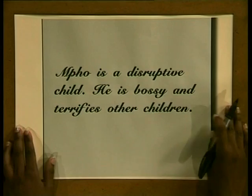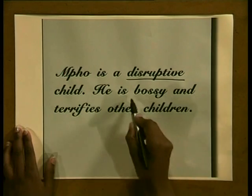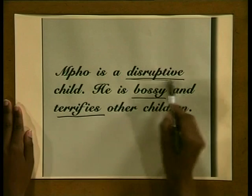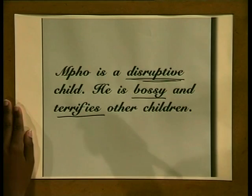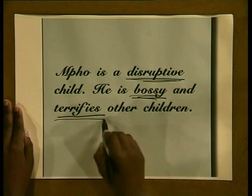Let's have a look at a similar example where the words have been changed: 'Mpoh is a disruptive child. He is bossy and terrifies other children.' This report looks at the same sort of behavior, but in a negative light. Instead of commanding authority and respect, the new choice of words has negative connotations. Disruptive implies that he interrupts lessons and is rude. Bossy and terrifies make him seem like a bully. All that has been changed are three or four words, but suddenly there is a whole new negative connotation.